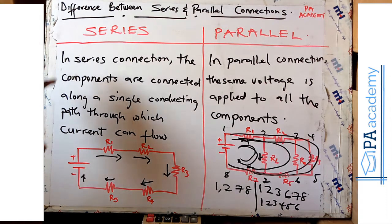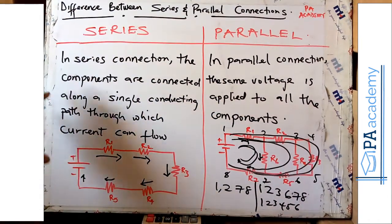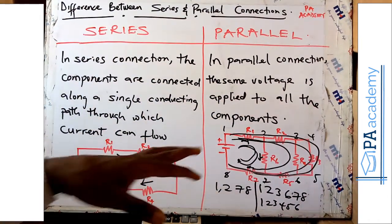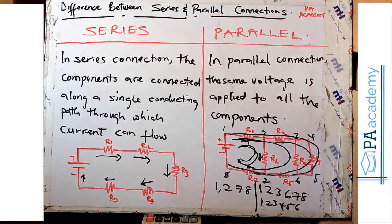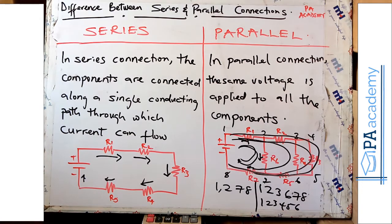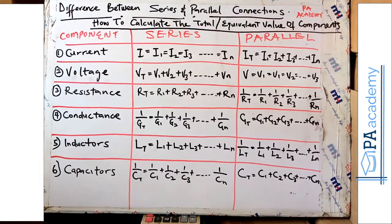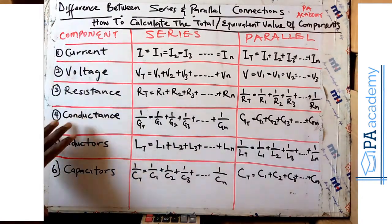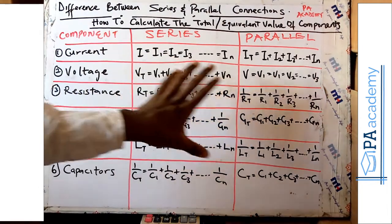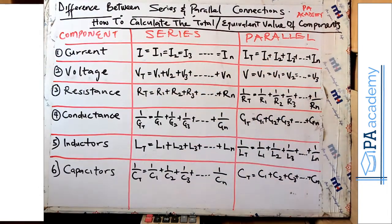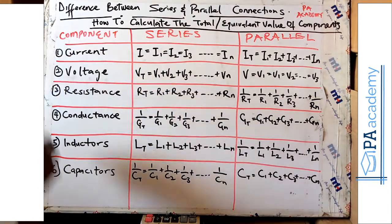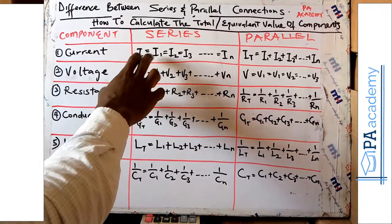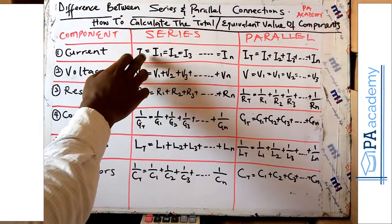Now let's look at the difference in terms of components connected in series and parallel. Looking at this comparison table, we have columns for series and parallel. Starting with current: in a series connection, the current I equals I1 equals I2 equals I3, depending on how many components you have.